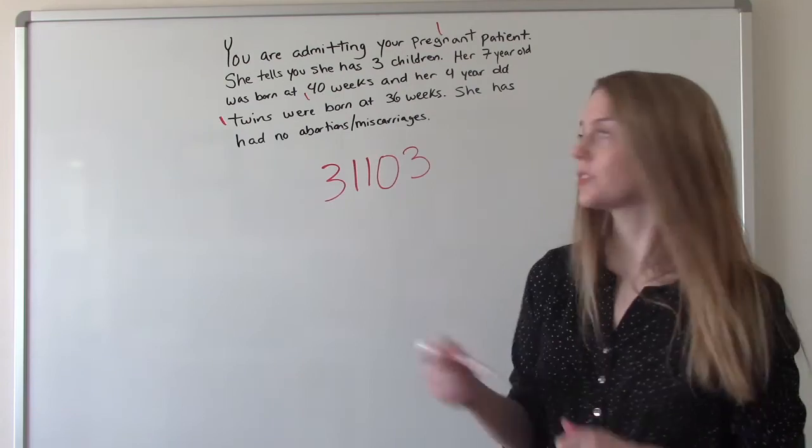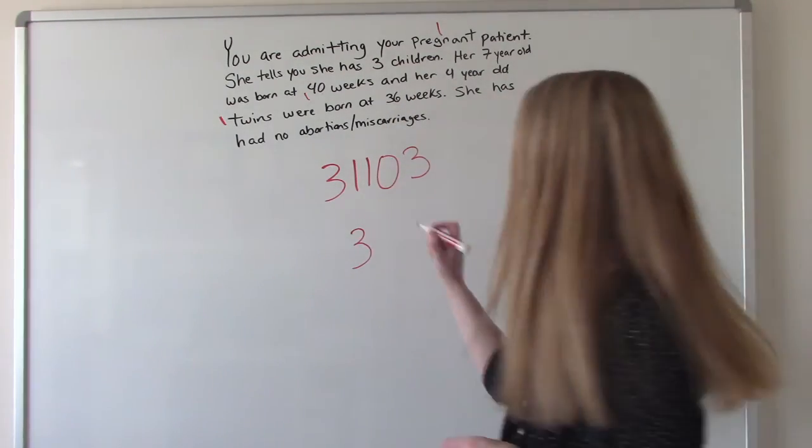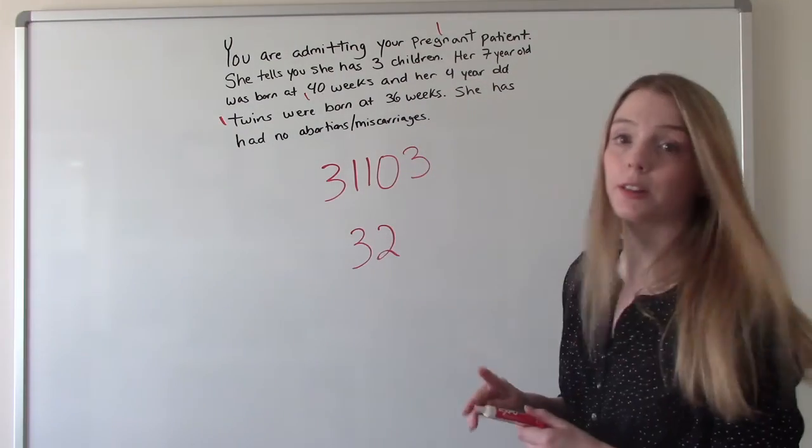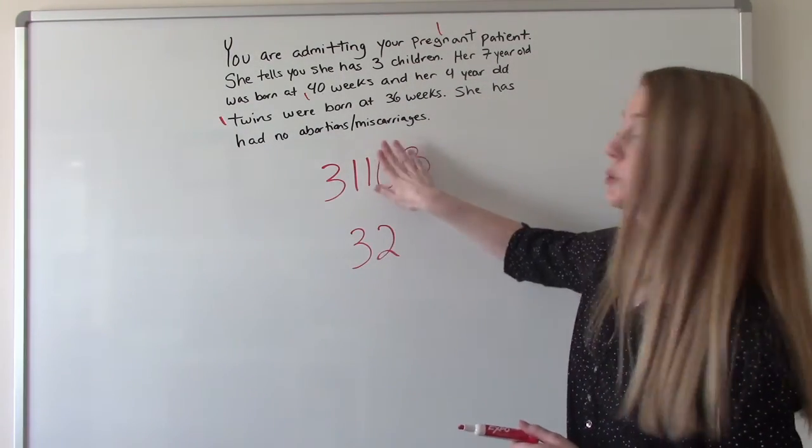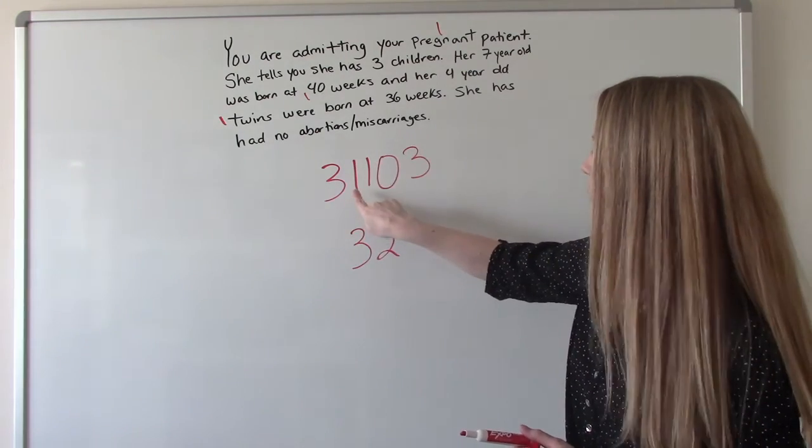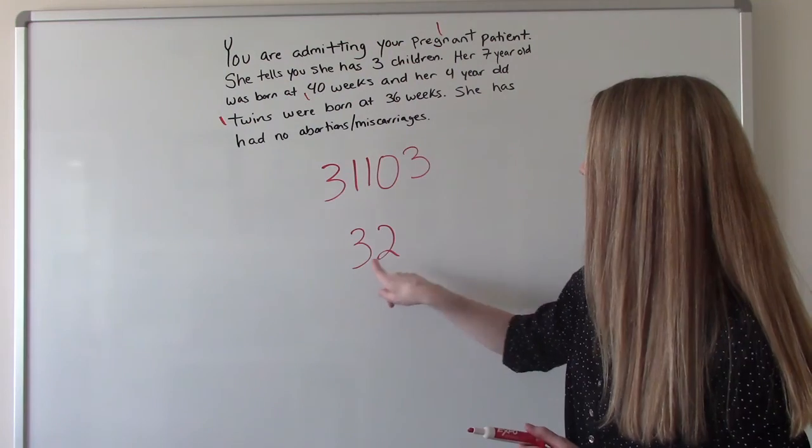But then now our P is two. Because remember, the P is the term plus the preterm. It has nothing to do with anything else. So that's one term, one preterm delivery. So our GP is a three, two.